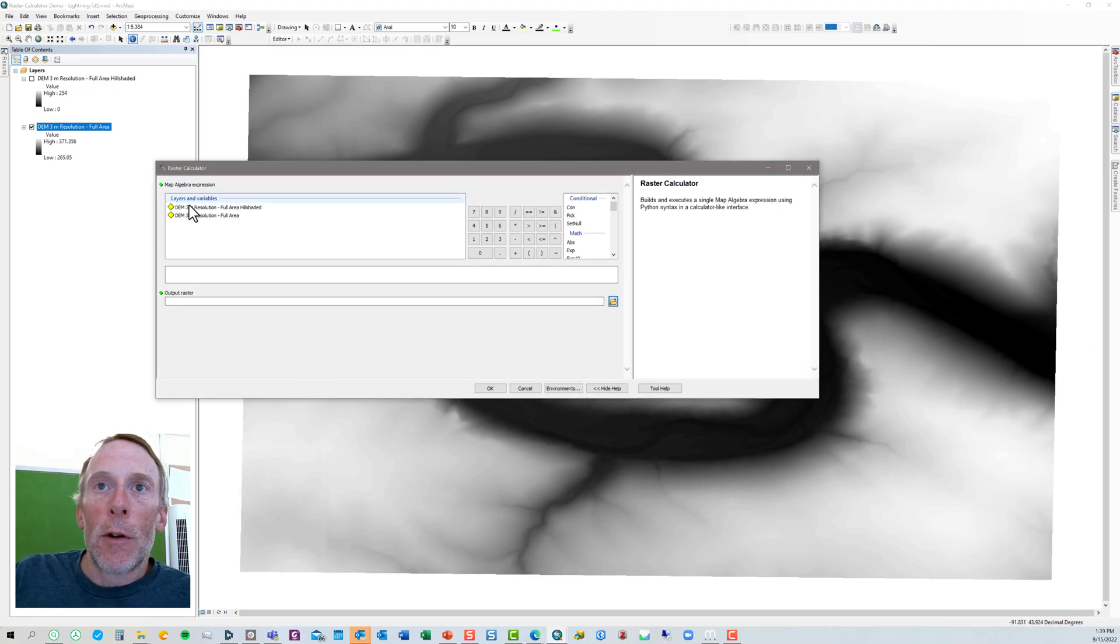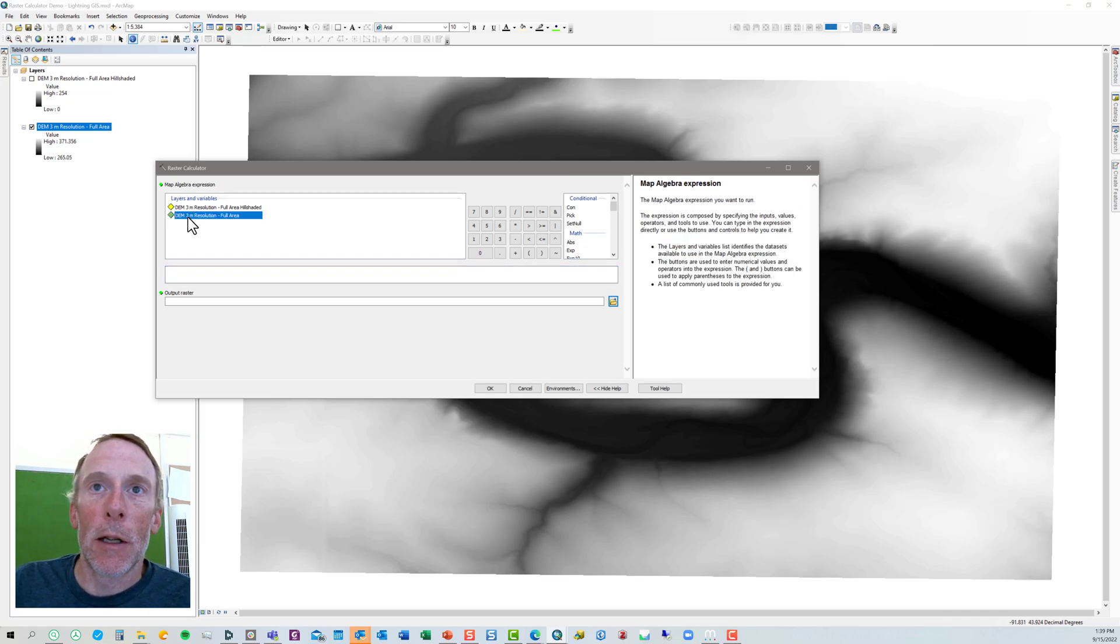Okay, first we've got the layers and variables that are available to us to manipulate. We want to manipulate the DEM three meter resolution full area raster. All right, now a tip, this is important for our raster calculator.